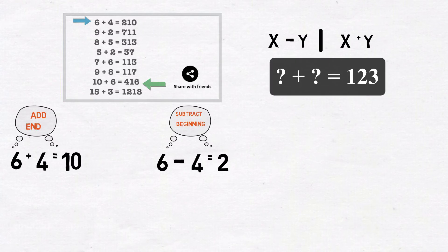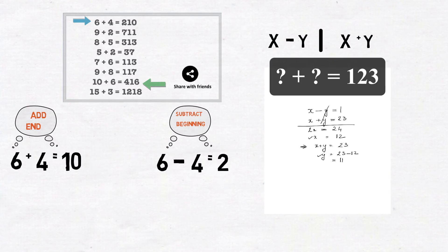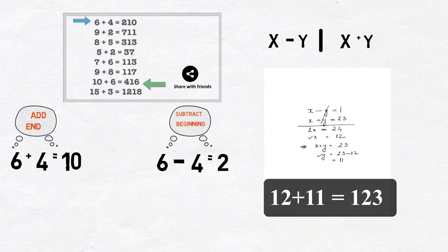So we have x minus y is equal to 1 and x plus y is equal to 23. That gives us, so x is equal to 12, which means that y is equal to 11. So one solution could be, 12 plus 11 is equal to 123.